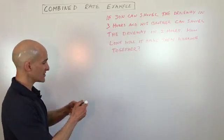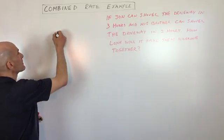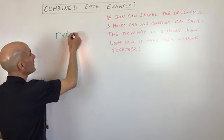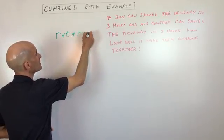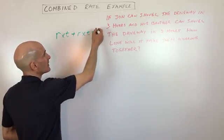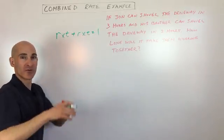So the way you want to think about this is like this. You want to think of it as one person's rate times the time that they spend plus the other person's rate times the time that they spend equals, in this case, one, which is one complete driveway.